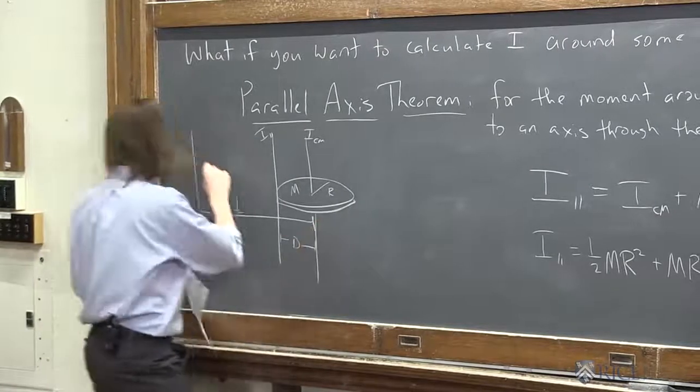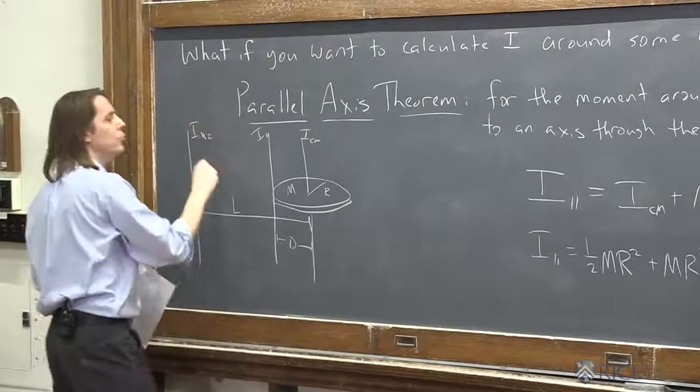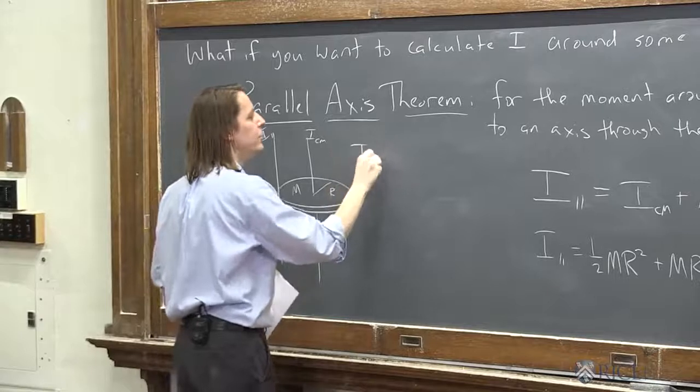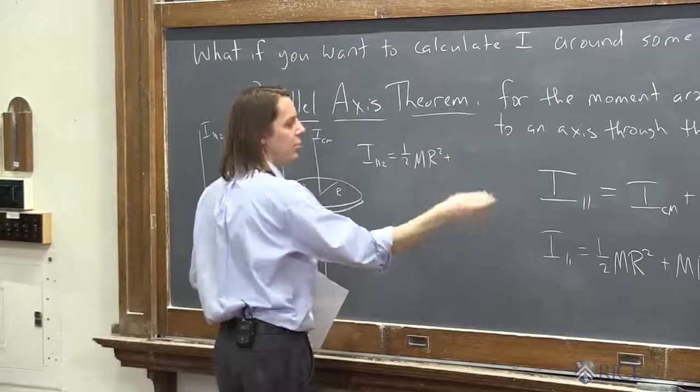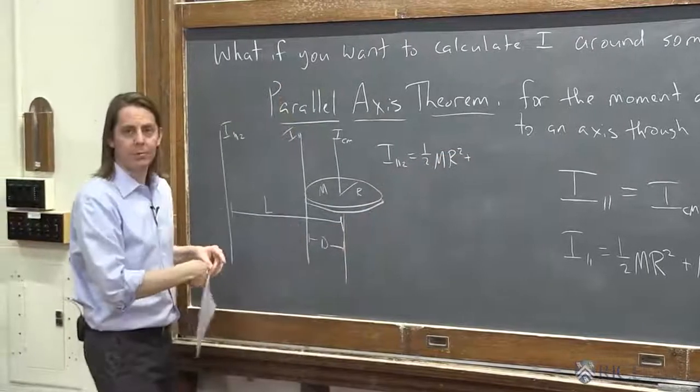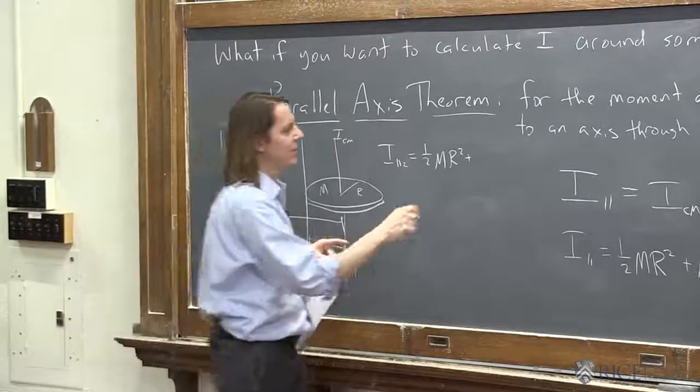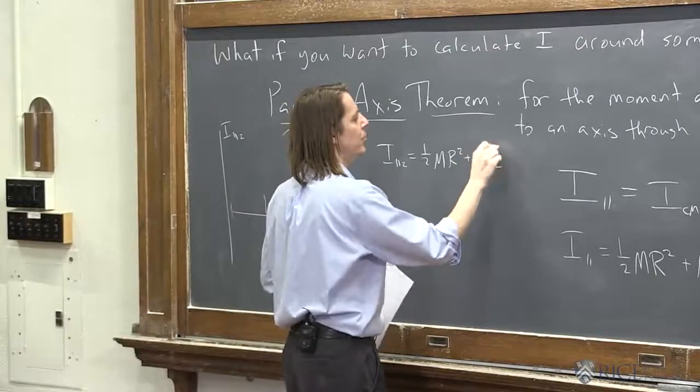And if I did that, the answer would be I parallel would be one half mr squared, plus, well, just ml squared, right? You can't combine it with r and get some nice, short, simple little formula. You just get that.